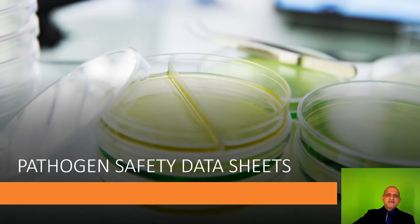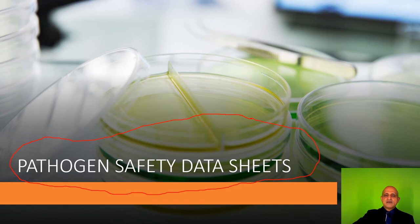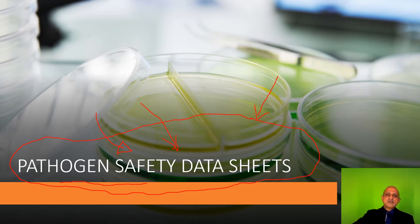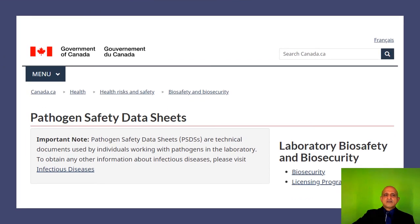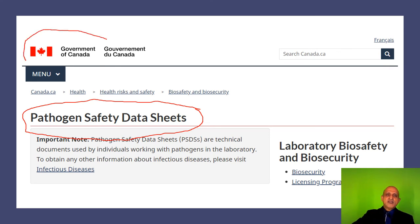We now move on to the pathogen safety data sheets, and we must appreciate the efforts of the Government of Canada in developing an excellent manual for laboratory users and biorisk managers. This pathogen safety data sheet — if you are a chemist, you will recall there is a material safety data sheet that discusses various chemicals and their combustibilities and safety elements. This pathogen safety data sheet focuses specifically on biological agents. It is accessible at the website, not as a static document but as a living document which is constantly updated by the Government of Canada.